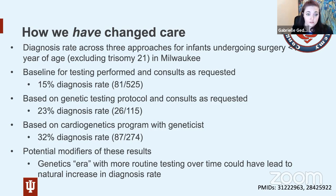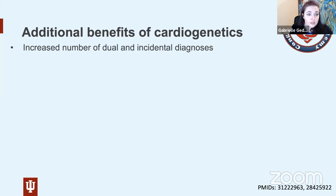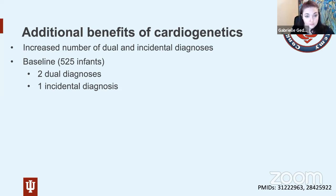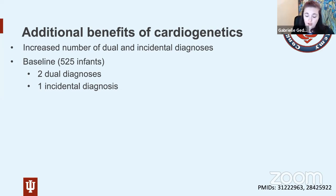At baseline in the first cohort of 525 infants, there were two dual diagnoses and one incidental diagnosis. One dual diagnosis was two chromosomal anomalies both detected on array; the other was a 22q deletion with Cornelia de Lange syndrome — a complex dual diagnosis not found until age four when the child underwent exome sequencing because they hadn't followed the expected course. The one incidental diagnosis was hemophilia — not a great combination with congenital heart disease, essentially screamed at us by the family history.